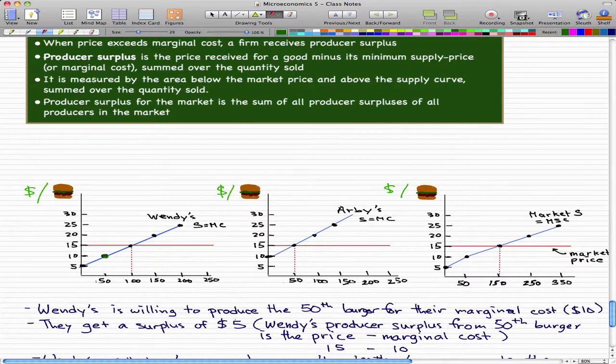and their marginal cost is $10. So they're willing to make their 50th burger for their marginal cost of $10. They get a surplus of $5 in this situation because Wendy's producer surplus from the 50th burger is the price, which is $15 minus marginal cost, which is $10. So that's where they get the surplus of $5.